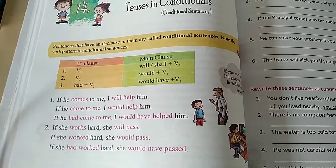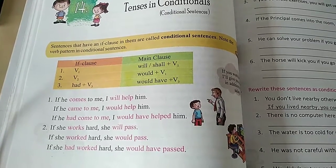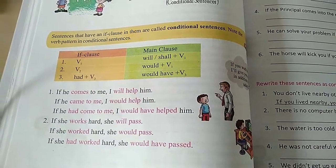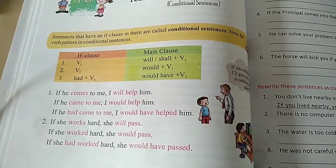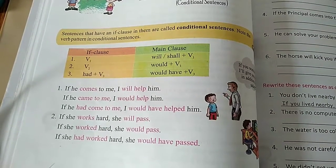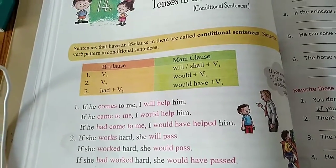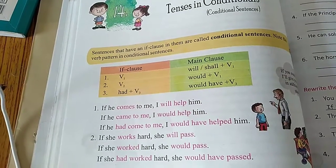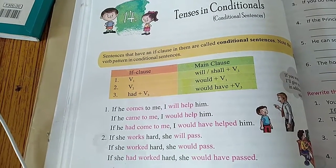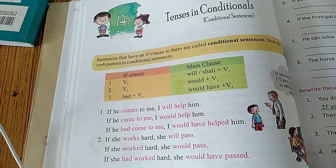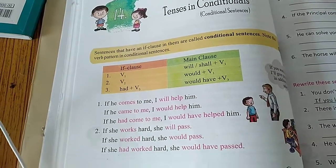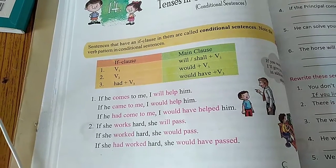The verb forms are V1, V2, and V3, along with helping verbs. The helping verb 'will' or 'shall' is used with V1, which belongs to the future tense. 'Had' plus V3 is the perfect form. These are the three patterns used in conditional sentences. For example: If he comes to me, I will help him.